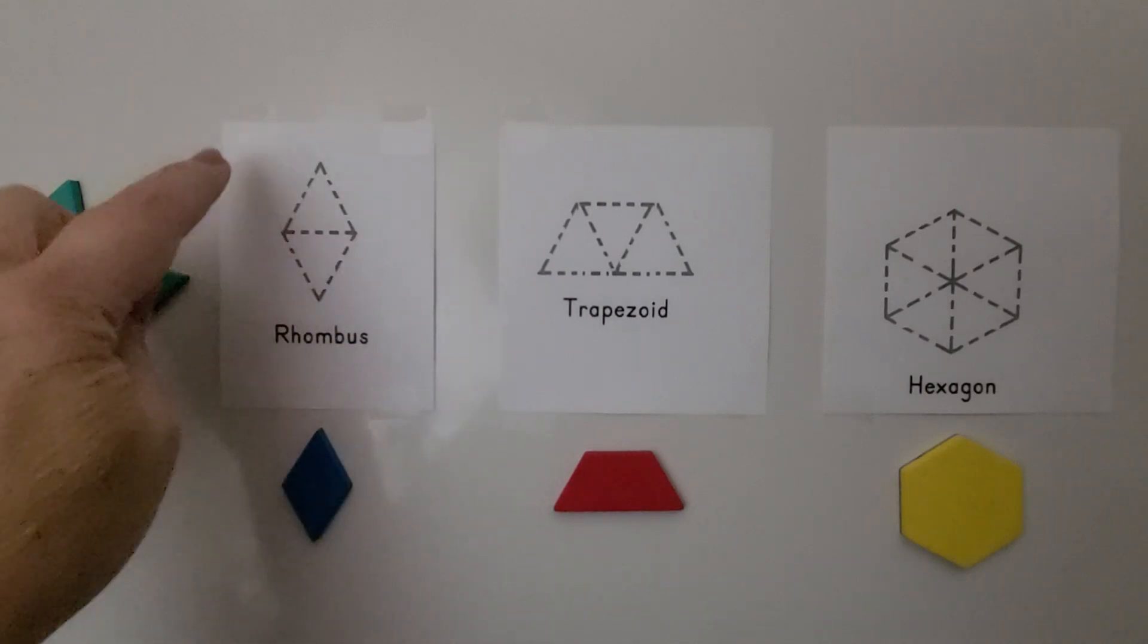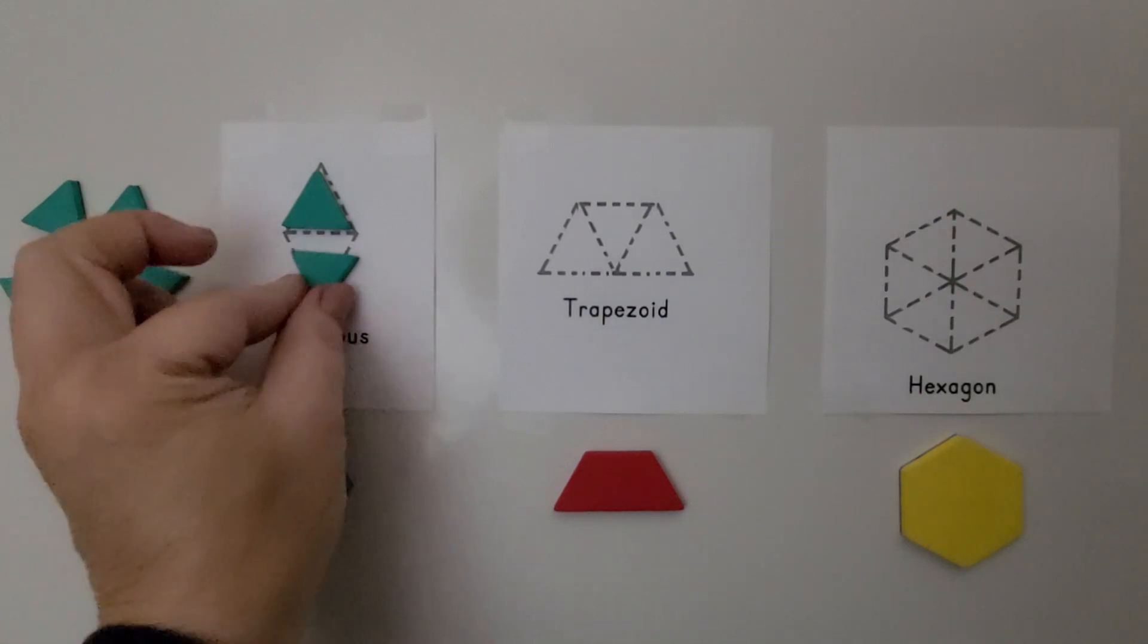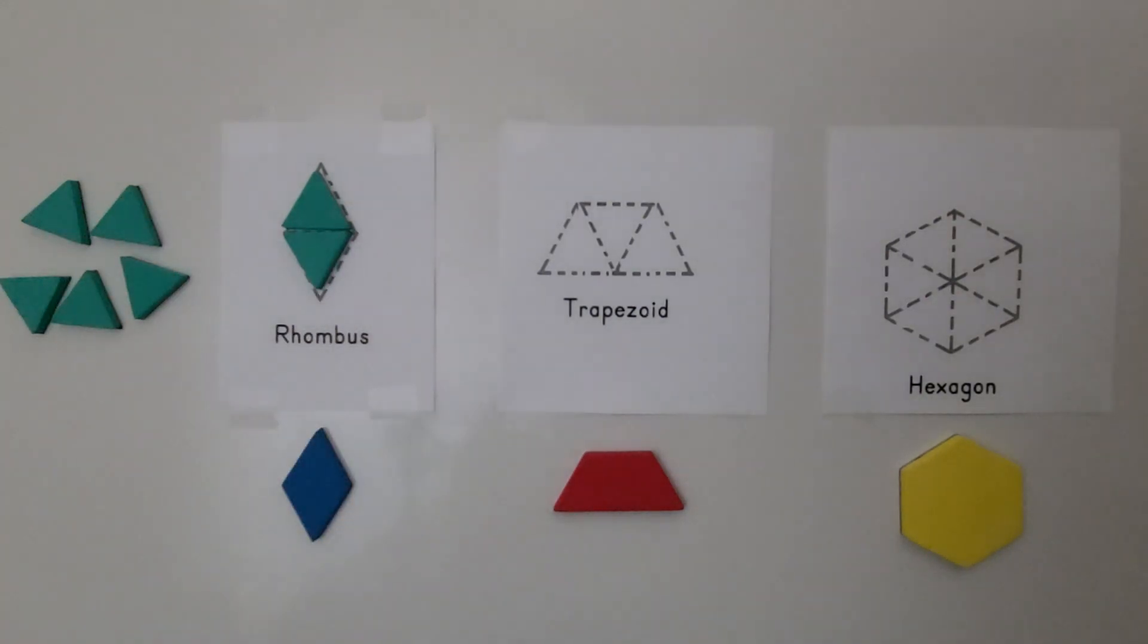This is a rhombus. We can put one triangle here. We can put another triangle here like this, putting their sides together. We can make a new shape, this rhombus.